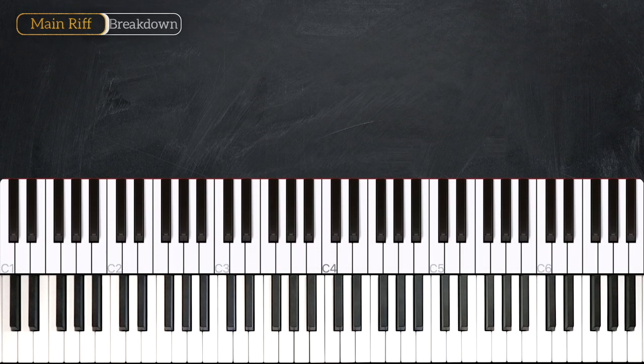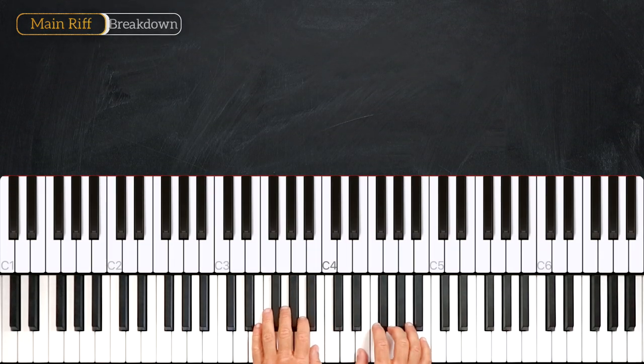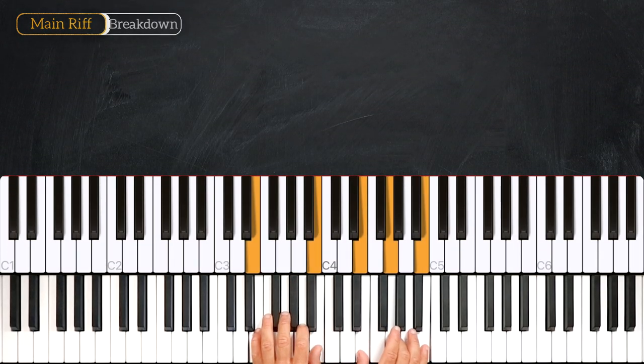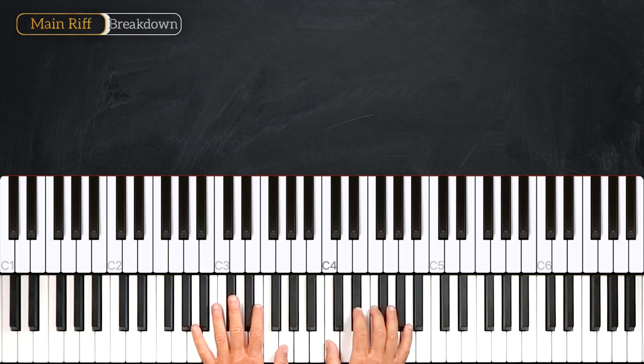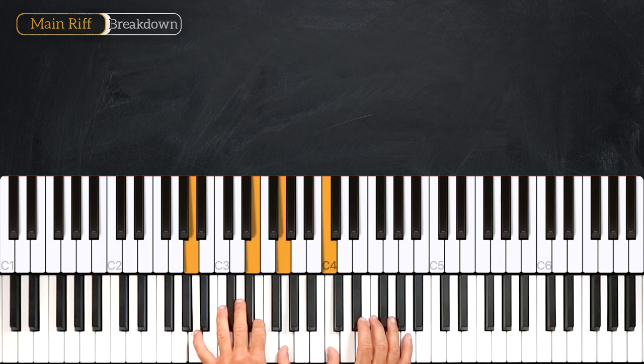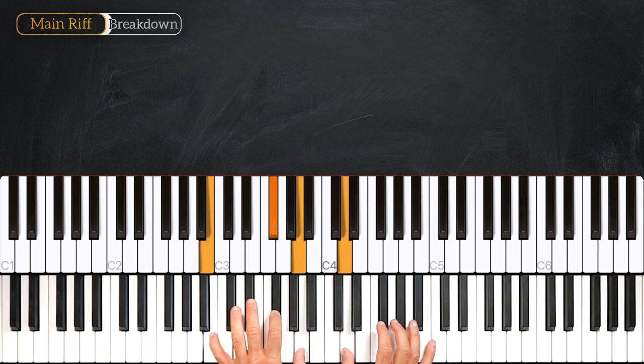Let's quickly recap the chords together. Starting on E minor, first degree. Then we go on A minor 7, into B minor 7. Good job.